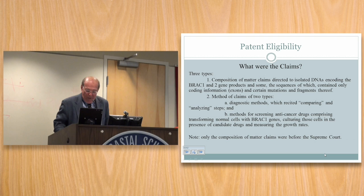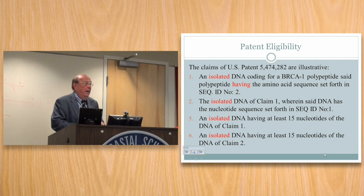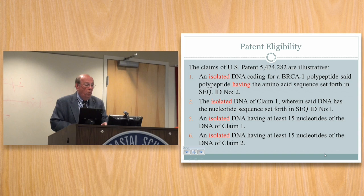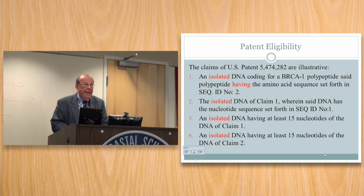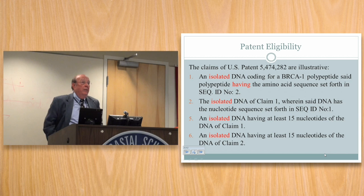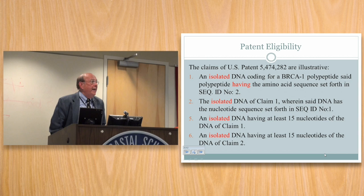Here's one of the patents. The claim was: an isolated DNA coding for the BRCA1 polypeptide — that's the DNA repair enzyme — said polypeptide having the amino acid sequence set forth in the patent specification. For review of claim structure, we talk about claims having a preamble, a transition, and a body. The preamble may or may not be limiting. The transition tells you whether the claim is open or closed. An open claim admits additional materials beyond what's claimed.